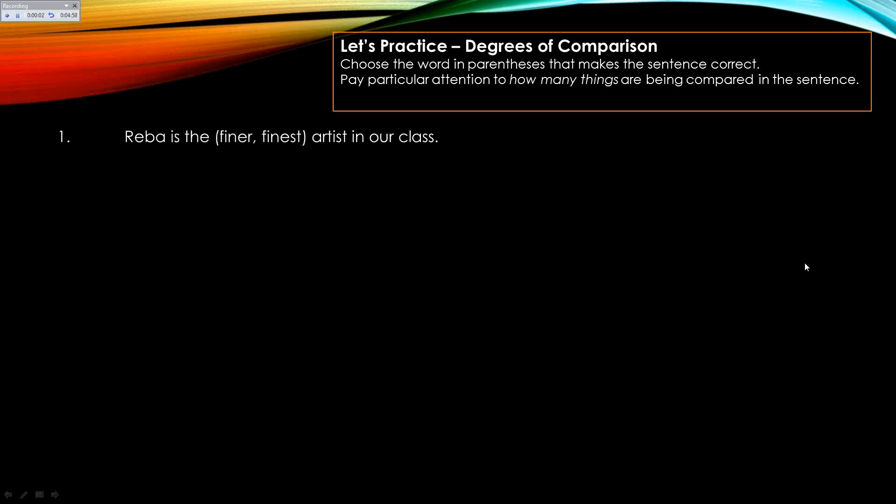Here's an example: Reba is the finer or the finest artist in our class. We have to know if we're talking about just two. Since it's a class, your assumption is that there's more than two people, so we're comparing Reba to several other people — it would be finest.